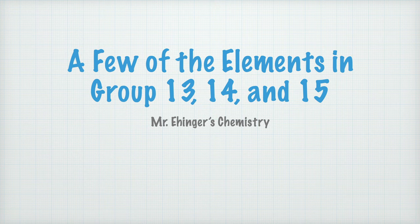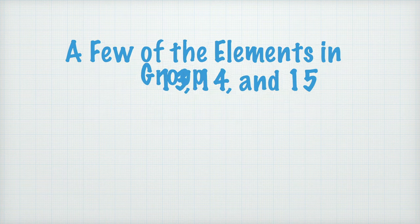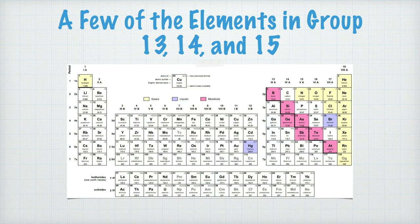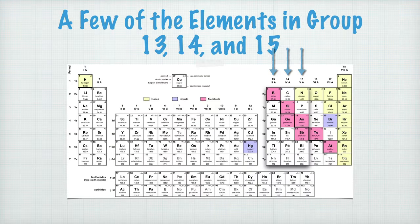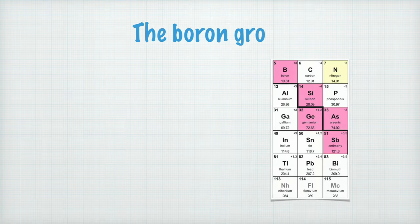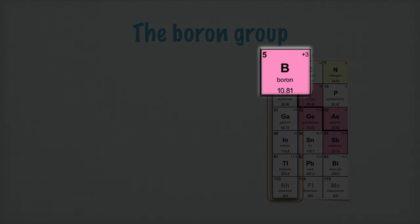In this video, the last one of all my videos on the periodic table, we'll have a look at some of the elements in group 13, 14 and 15. We find them here in the periodic table, and most often we just call them the boron group, the carbon group and the nitrogen group from the first element in each group.